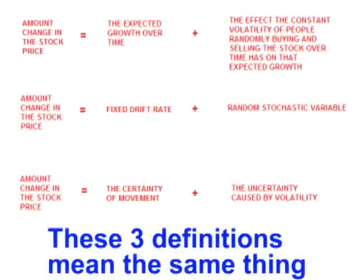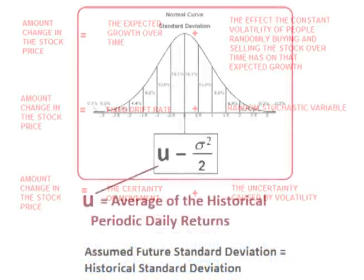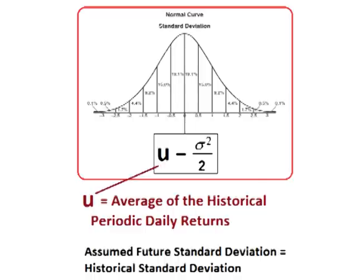The drift is the historical average of the periodic daily returns, eroded by volatility at the rate of half the variance over time. But that drift has a random part that combines with the drift to give an actual rate of return that is normally distributed. In short, Brownian motion means that if we graph the future periodic daily returns, we assume the graph will form a normal distribution bell-shaped curve using the drift as the mean and the historical standard deviation as the future standard deviation.